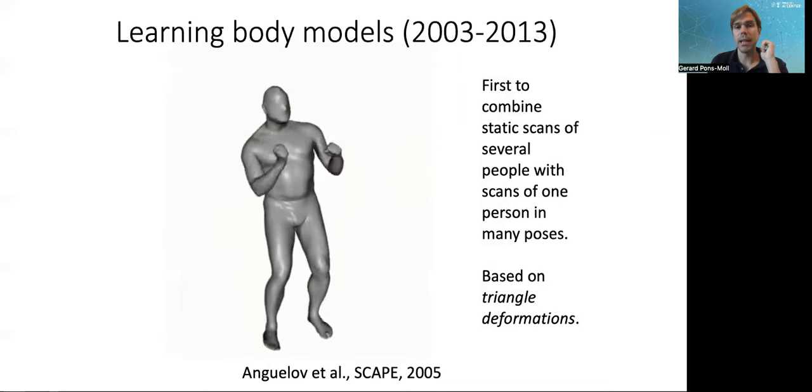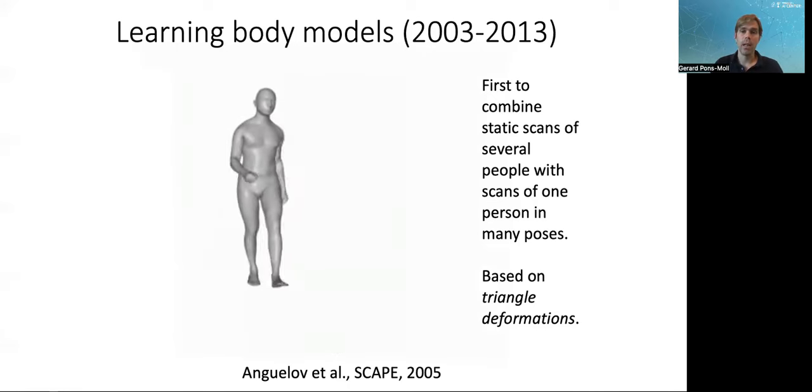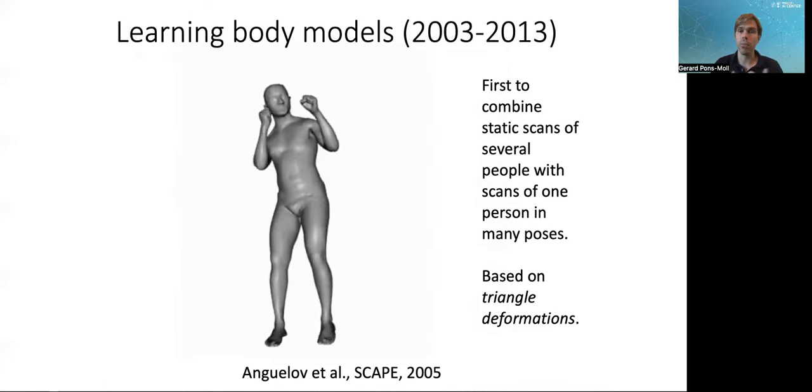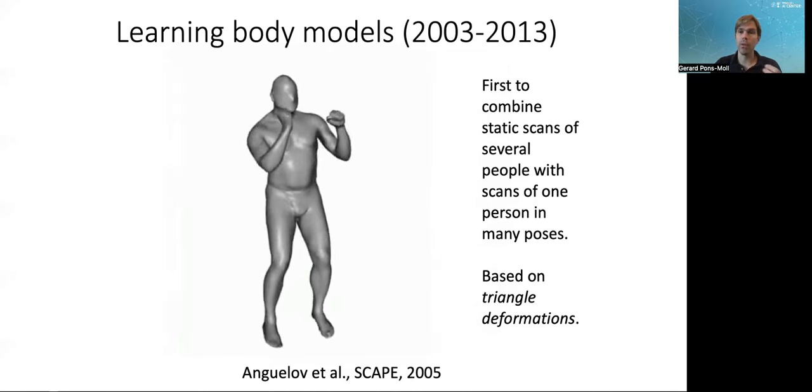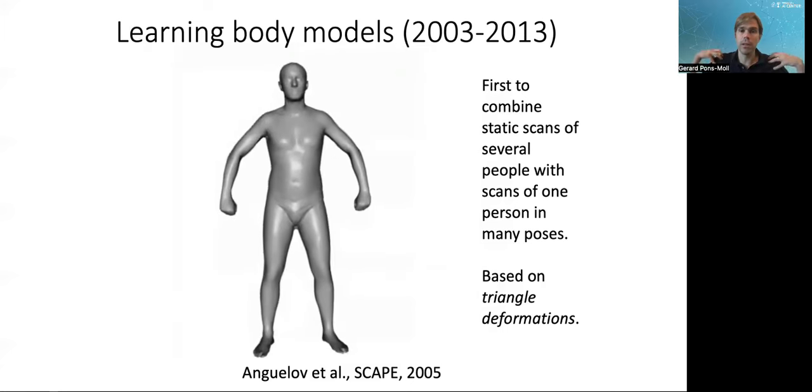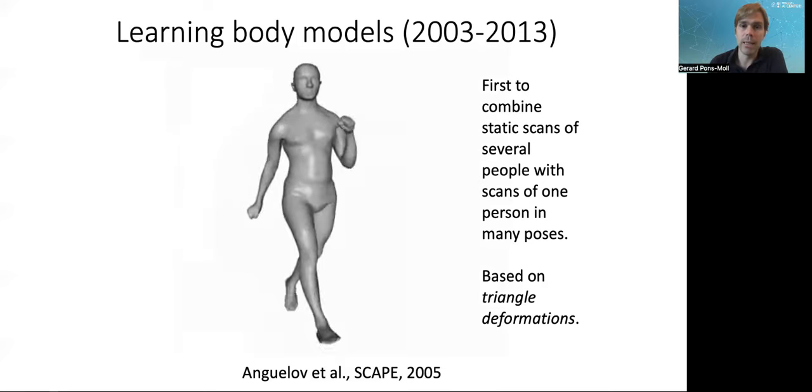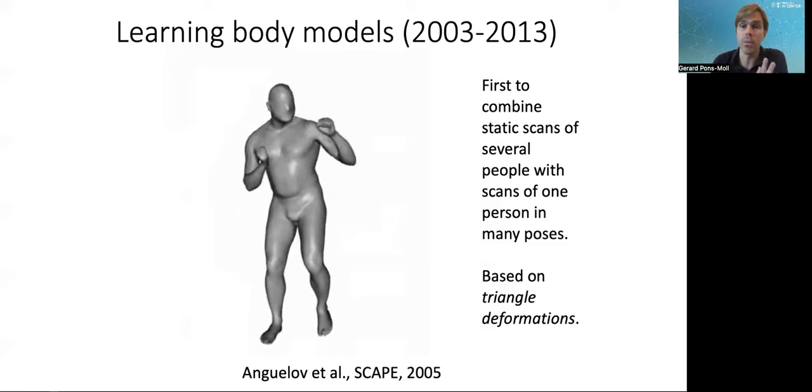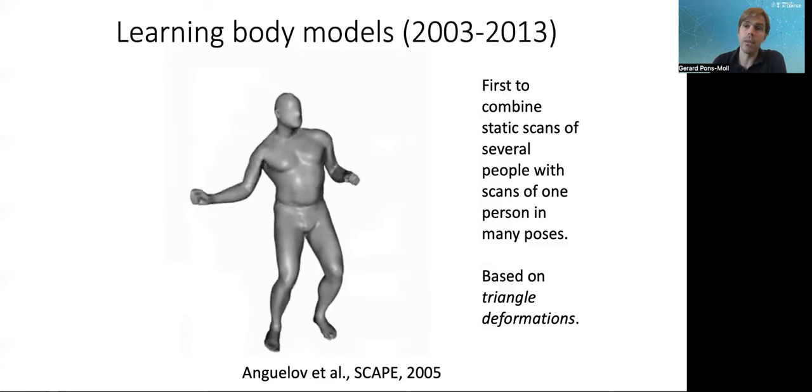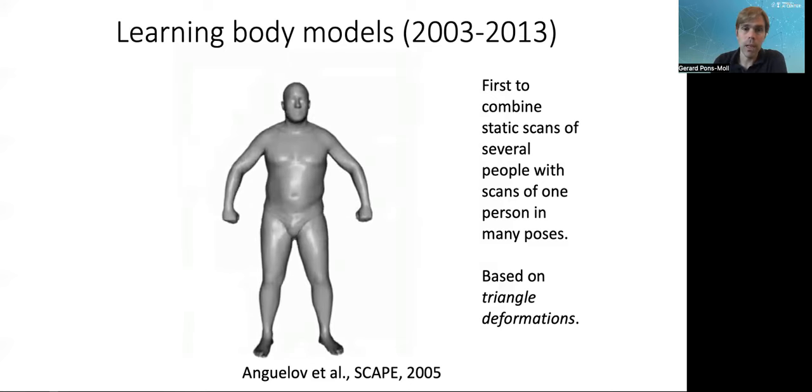A breakthrough model was definitely the SCAPE model, which appeared in 2005. Basically, they modeled the shape statistics and then using a single subject, they modeled how our body deforms according to pose. So basically how the elbows deform when we flex, how the shoulders bulge and change when we are performing different poses. This was the first model that was actually quite realistic, both in terms of shape identities and also in terms of animation quality.